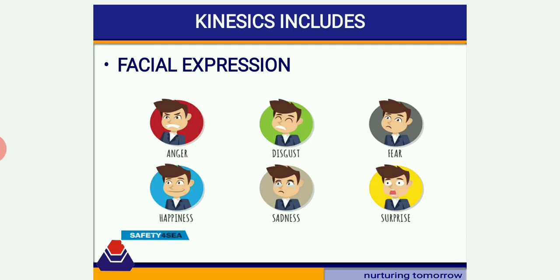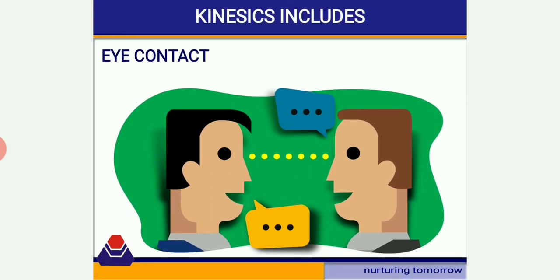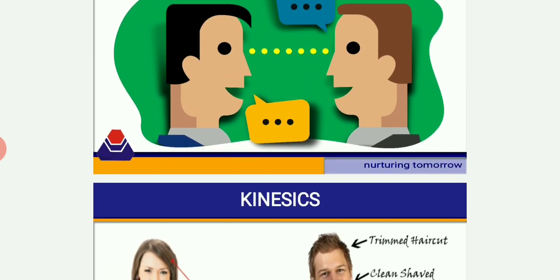There are certain expressions that are very common and understandable by everyone. Kinesics also includes eye contact. Whenever giving a lecture or presentation, you should try to maintain eye contact with every member of the audience. Three to five seconds are sufficient for eye contact with each person — more than that will seem like a stare. Eye contact gives you confidence, and the audience feels that the presenter is paying attention to each of them.